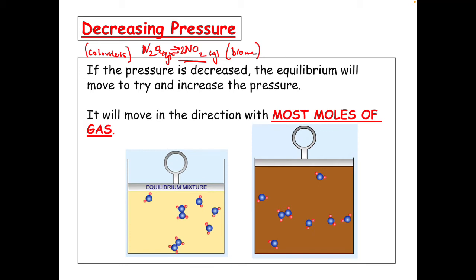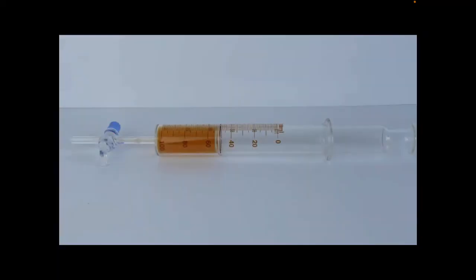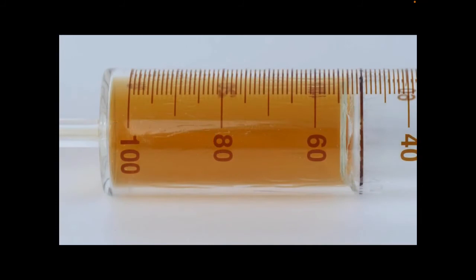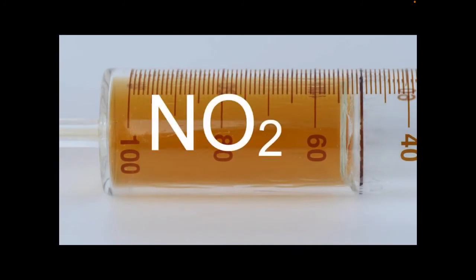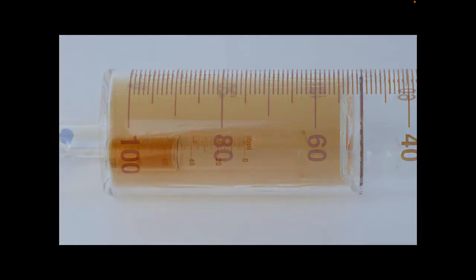You're now going to see a video of this in action — what happens when the pressure in a syringe containing a mixture of these two gases is increased and then decreased, and you'll be able to see what happens to the colour. We have our syringe with the NO2 gas in equilibrium with N2O4: one mole of N2O4 on one side and two moles of NO2 on the other. We're going to increase the pressure by squeezing in the syringe, reducing the volume.